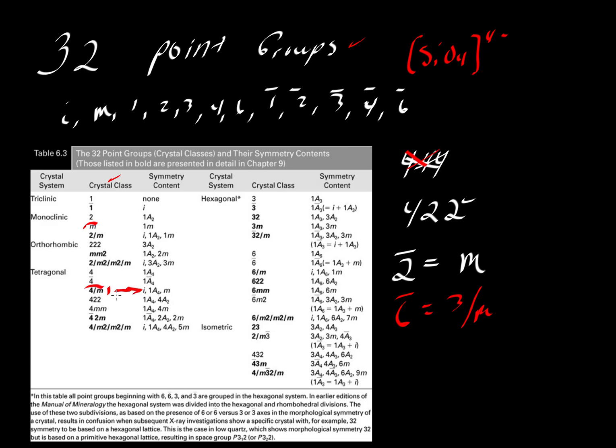If we have 4 over M, what kind of symmetry elements are we going to see? We should find an I, a center of symmetry. We should find one 4-fold axis, no more and no less, and a mirror plane, just one, no more, no less.